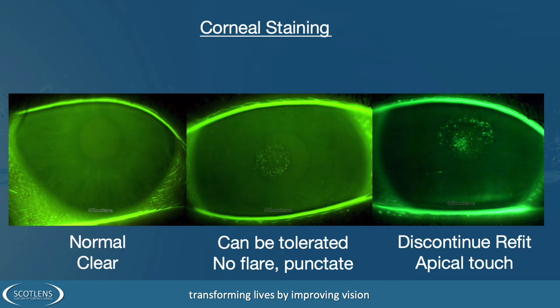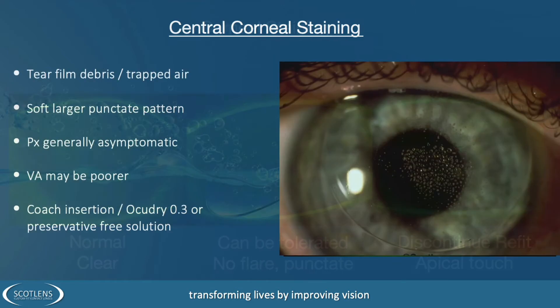We do sometimes see staining that can be caused from poor insertion and removal techniques, solution toxicities, or ocular surface conditions. It may be mild and central like you see in the middle image here, or it may be more significant and need to lead to discontinuation. This is how we should deal with the various types of staining that we see.